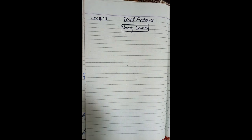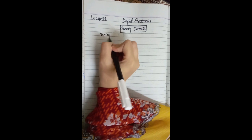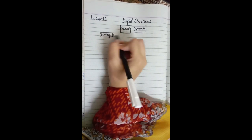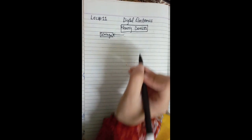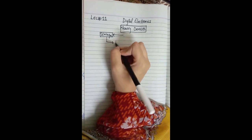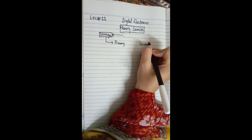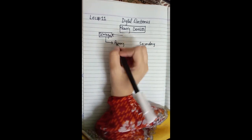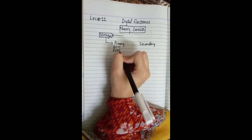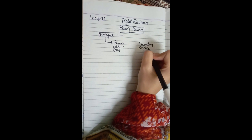Now, where do we start from memory devices? The first thing is storage — there is something that you can store, it is simply storage. Storage devices we have: which devices? There will be one primary and one secondary. Primary will be RAM and ROM, and secondary will be peripheral devices.